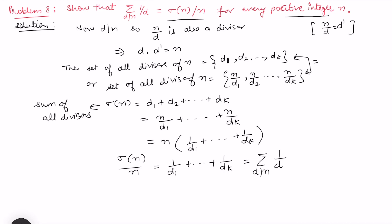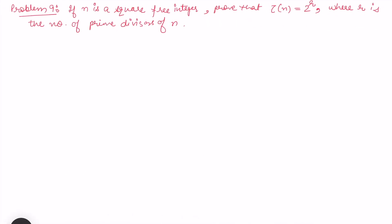That shows problem 8 is proved and the equality holds. Now for problem 9: if n is a square-free integer — meaning there are no squares in the prime factorization — we want to prove that τ(n) = 2^r, where r is the number of prime divisors of n.